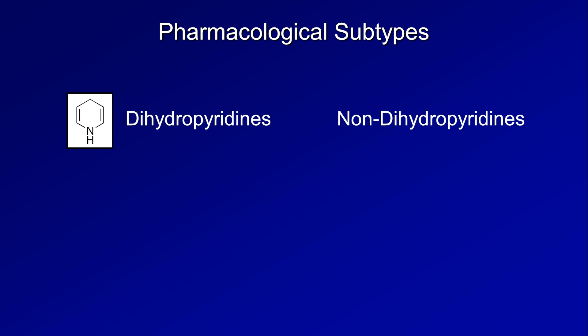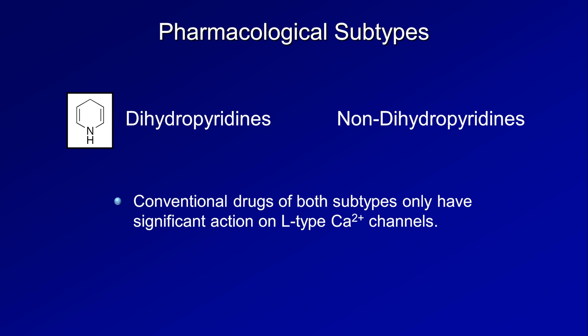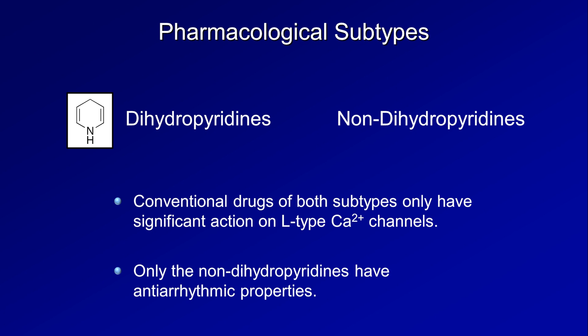There are two major types of calcium channels: the T-type for transient and L-type for long-lasting. Conventional drugs of both subtypes of calcium channel blockers only have action on the L-type calcium channel. However, only the non-dihydropyridines have antiarrhythmic properties.